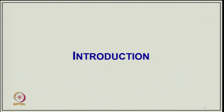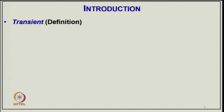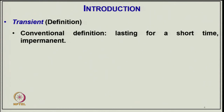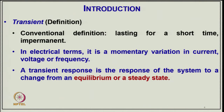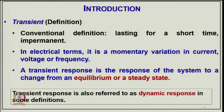Coming to the introduction, the conventional definition of a transient is something lasting for a short time — it is not permanent and only exists for a short period. In electrical terms, it is a momentary variation in current, voltage, or frequency. A transient response is the response of a system to a change from an equilibrium or steady-state condition, also sometimes referred to as a dynamic response.